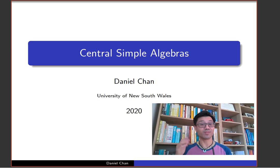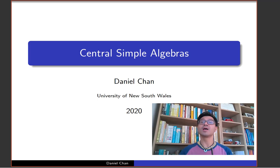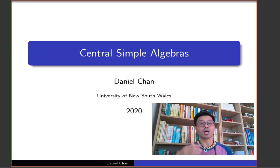Hi, I'm Daniel Chan from UNSW Sydney. Welcome to another adventure in pure mathematics. In the last video we looked at the notion of quaternion algebras, which you could think of as non-commutative analogues of quadratic field extensions. Now these quaternion algebras are special examples of things called central simple algebras, and that's the subject of today's video. These central simple algebras you can think of as non-commutative generalizations of field extensions, or at least separable field extensions.